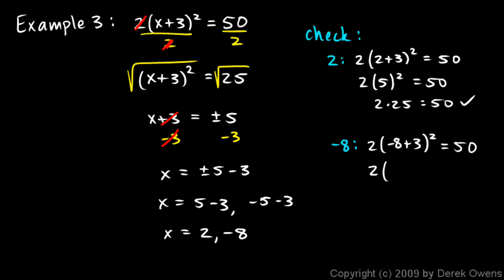So 2 times, let's see, negative 8 plus 3 is negative 5. That is squared, and that should be 50. Negative 5 squared is 25, so this is 2 times 25, and that equals 50. So that works also. Those are my two answers, 2 and negative 8, and they both check out.